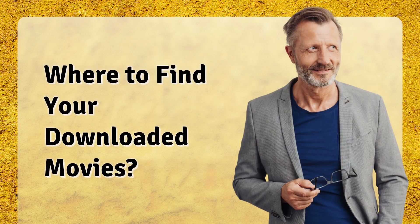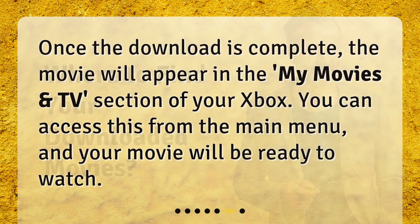Where to find your downloaded movies? Once the download is complete, the movie will appear in the My Movies and TV section of your Xbox. You can access this from the main menu, and your movie will be ready to watch.